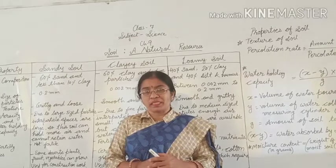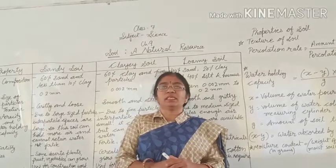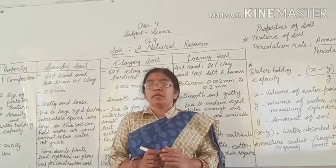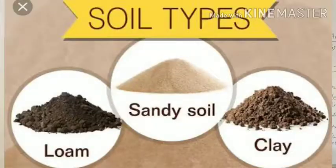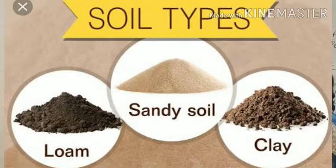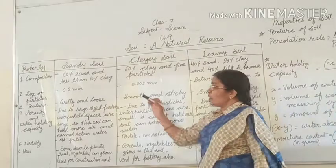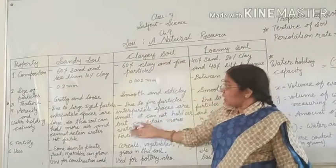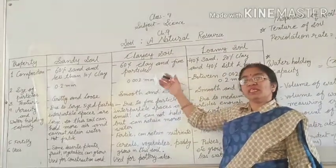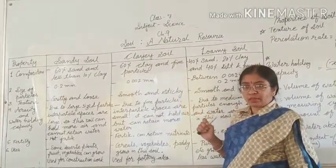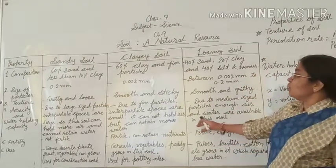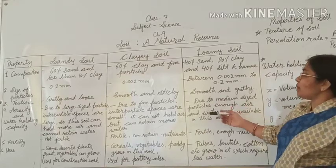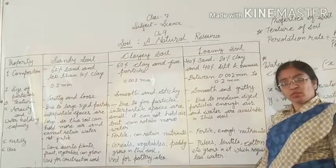Now on the basis of particle size and some basic properties like water holding capacity and air acidity, the soils are divided into three major groups: sandy soil, clay soil, and loamy soil. We will not only explain all three types of soil but also differentiate between them. With the help of this table, I will explain the basic properties of these three types of soil.